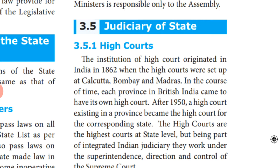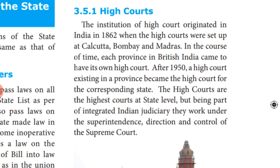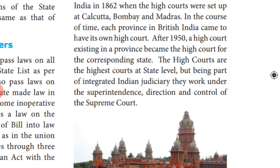Now we will discuss the judiciary powers in the state government. The institution of the High Court originated in India in 1862 when the High Court was set up at Calcutta, Bombay, and Madras. In the course of time, each province in British India came to have its own High Court. After 1950, the High Courts existing in the provinces became the High Court for the corresponding state. The High Courts are the highest courts at the state level, but being part of the integrated Indian judiciary, they work under the superintendence, direction, and control of the Supreme Court.